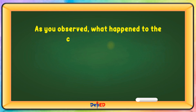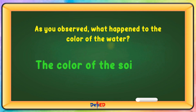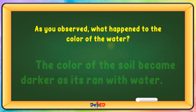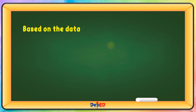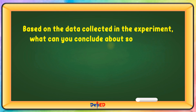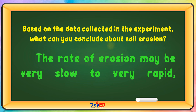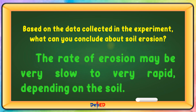As you observed, what happened to the color of the water? The color of the water became darker as it ran with soil. Based on the data collected in the experiment, what can you conclude about soil erosion? The rates of erosion may be very slow to very rapid, depending on the soil.